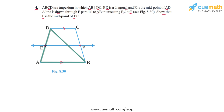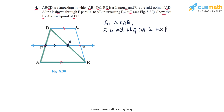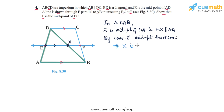In triangle DAB, E is the midpoint of DA and EX is parallel to AB, where X is the intersection point on DB. So by the converse of the midpoint theorem, we can claim that X must be the midpoint of DB.